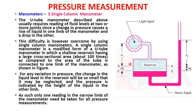The pressure is indicated by the height of the liquid in the other limb. Only one reading in the narrow limb needs to be taken for all pressure measurement — either the rise of h2 or the lowering of h1 is taken into consideration, and the pressure can be directly measured.